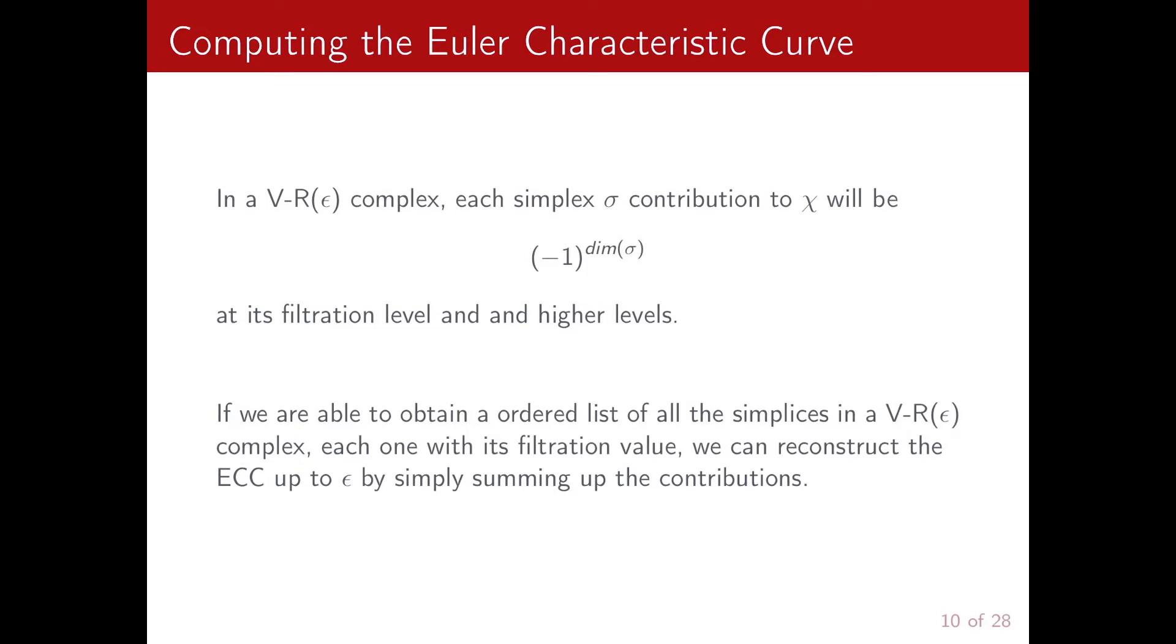So each simplex contribution to the Euler characteristic will be plus or minus one, depending on its dimension, and it will appear at its filtration level. So the idea is that if we are able to obtain a list of all the simplices ordered by the filtration, we can reconstruct the Euler characteristic curve by simply summing up all the contributions.